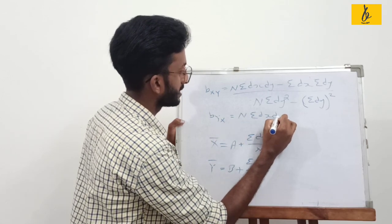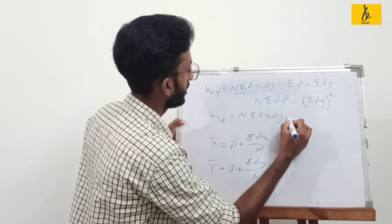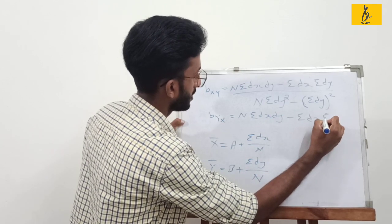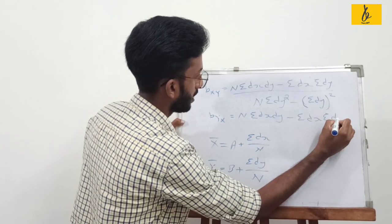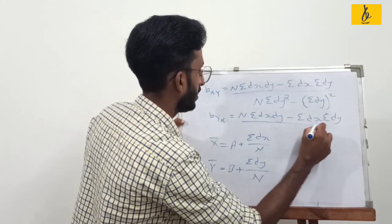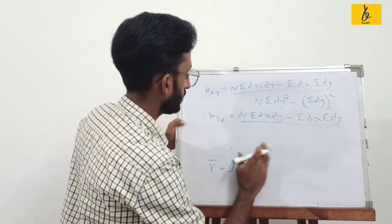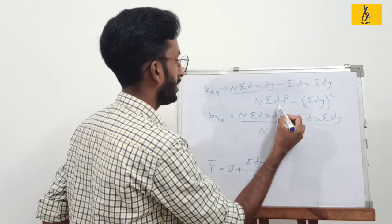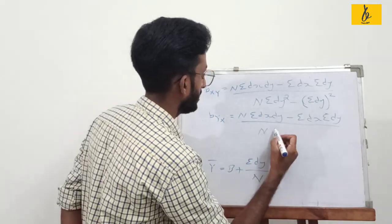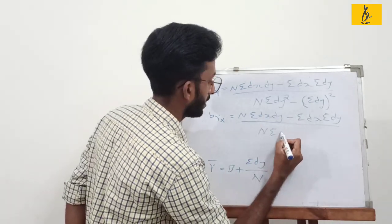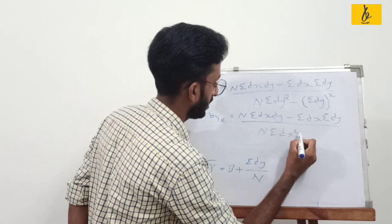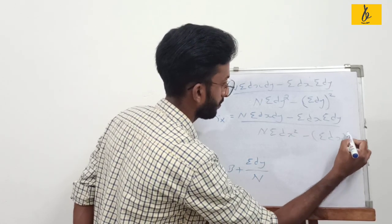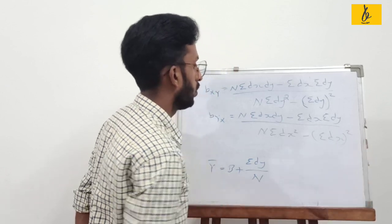And byx is: sigma dx dy minus sigma dx into sigma dy divided by n, all divided by sigma dx squared minus sigma dx whole squared divided by n.